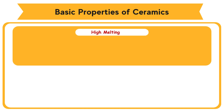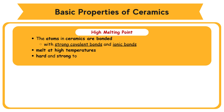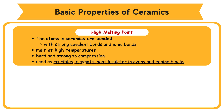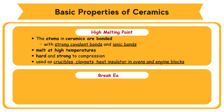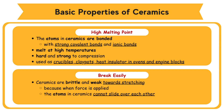High melting point — the atoms in ceramics are bonded with strong covalent bonds and ionic bonds, so they only melt at high temperatures; they are hard and strong in compression. Suitable to be used as crucibles, clay pots, heat insulators in ovens, and engine blocks. Ceramics are brittle and weak towards stretching, because when force is applied, the atoms in ceramics cannot slide over each other since they are strongly bonded in an indefinite arrangement.